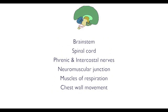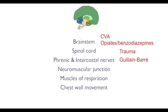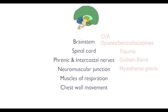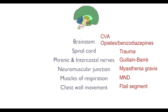Use this list to come up with some differential diagnoses for type 2 respiratory failure. For example, a stroke or drugs such as opiates or benzodiazepines may adversely affect the respiratory centre of the brainstem. Trauma to the spinal cord, neurological conditions affecting the nerves supplying the muscles of respiration such as Guillain-Barré syndrome, myasthenia gravis affecting the neuromuscular junction, motor neuron disease affecting muscles, and a flail segment can adversely affect the mechanics of chest wall movement and ventilation. You can pause the video and see what other differential diagnoses you can come up with using this framework.